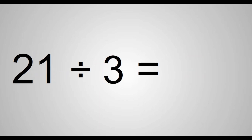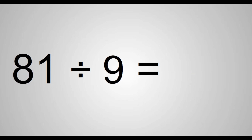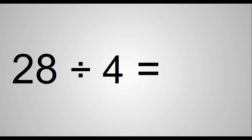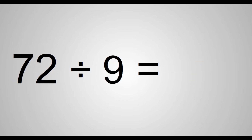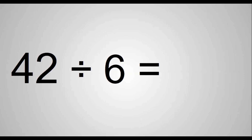21 divided by 3 equals 7. 81 divided by 9 equals 9. 28 divided by 4 equals 7. 72 divided by 9 equals 8. 42 divided by 6 equals 7.